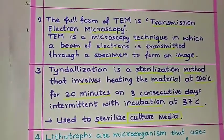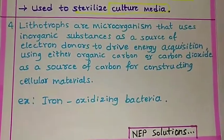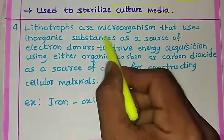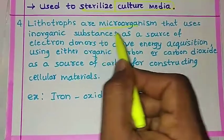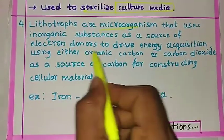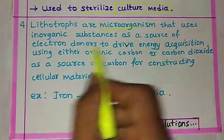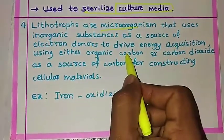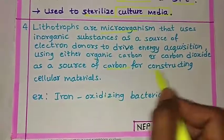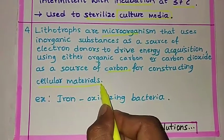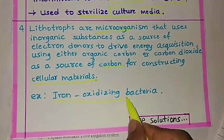The fourth question is about lithotropes. Lithotropes are microorganisms that use inorganic substances as a source of electron donors to drive energy acquisition, using either organic carbon or carbon dioxide as a source of carbon for constructing cellular materials. An example of lithotropes is iron-oxidizing bacteria.